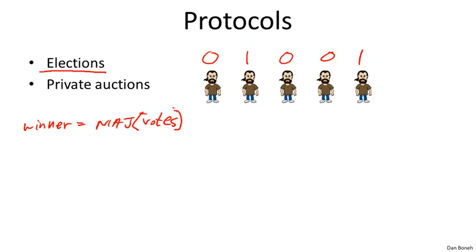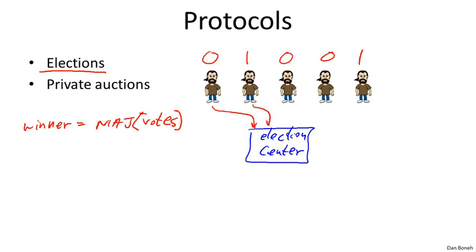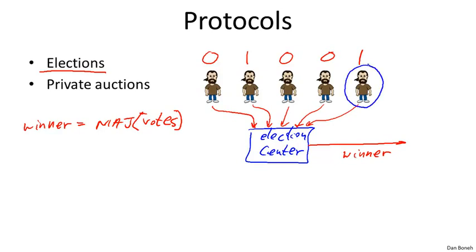To do this, we introduce an election center that helps compute the majority but keeps votes otherwise secret. The parties each send a special encryption of their votes to the election center. At the end of the election, the election center can compute and output the winner, but other than the winner, nothing else is revealed about the individual votes — they remain completely private. The election center also verifies that each voter is allowed to vote and has only voted once.